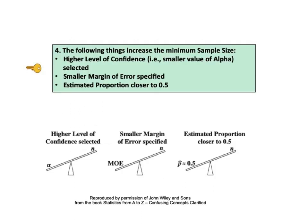KTU number 4 states the following things increase the minimum sample size: a higher level of confidence (smaller value of alpha selected), a smaller margin of error specified, or an estimated proportion closer to 0.5.